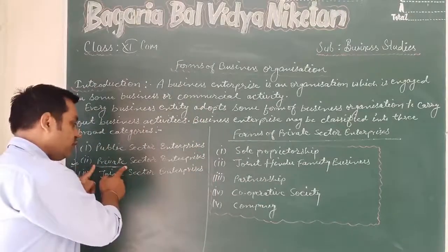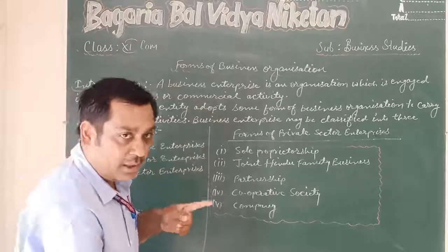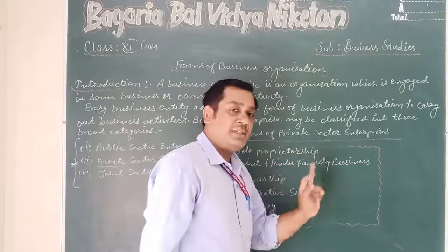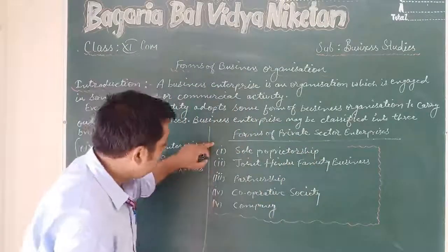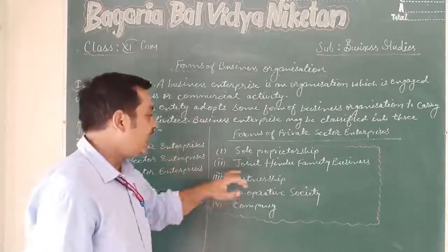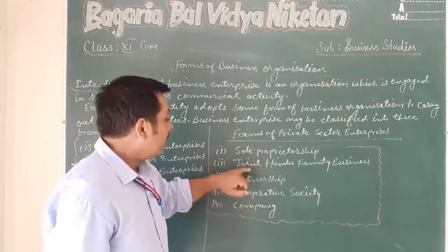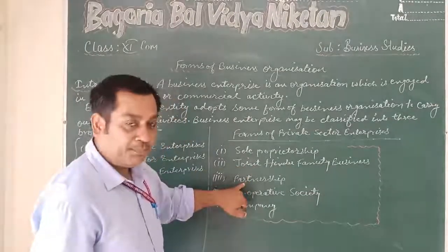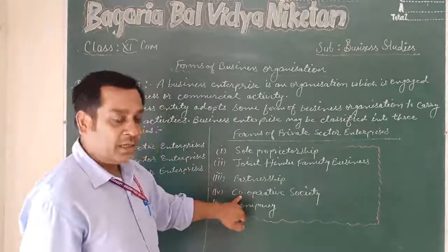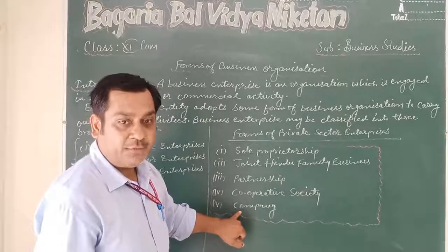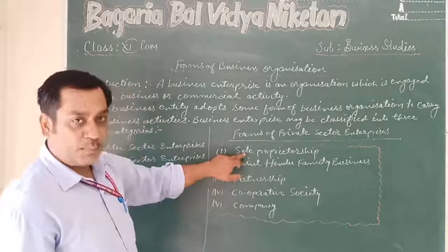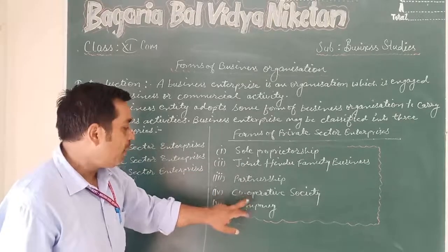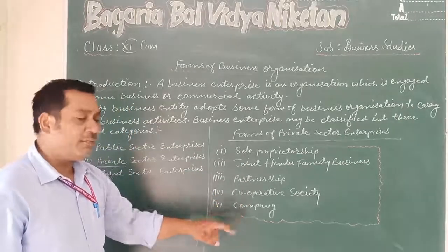Private sector enterprises are further divided into five major categories. First, sole proprietorship. Second, joint Hindu family business. Third, partnership. Fourth, cooperative society. And fifth, company.